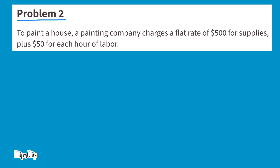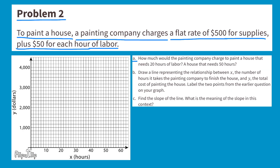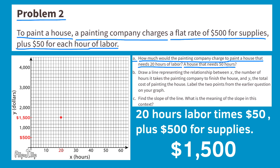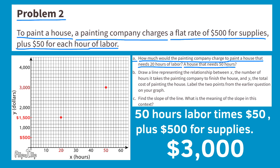Problem number two. To paint a house, a painting company charges a flat rate of $500 for supplies plus $50 for each hour of labor. Part A: How much would the company charge for 20 hours of labor? For 50 hours? Twenty hours times $50 plus $500 equals $1,000 plus $500, which is $1,500. Fifty hours times $50 plus $500 equals $2,500 plus $500, which is $3,000.